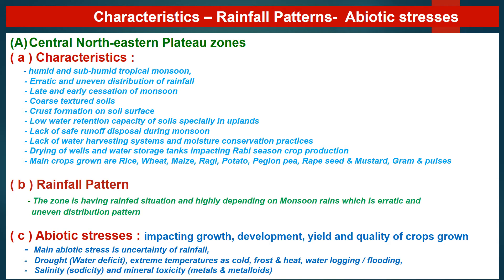The Central North-Eastern Plateau zone is highly dependent on monsoon rains, which have erratic and uneven distribution patterns. Abiotic stresses impacting growth, development, yield, and quality of crops include: uncertainty of rainfall, drought representing water deficit, extreme temperatures including cold, frost, and heat, waterlogging and flooding conditions, and soil-related issues such as salinity, sodicity, and mineral toxicity where metals and metalloids exceed permissible limits, impacting crop growth and production.